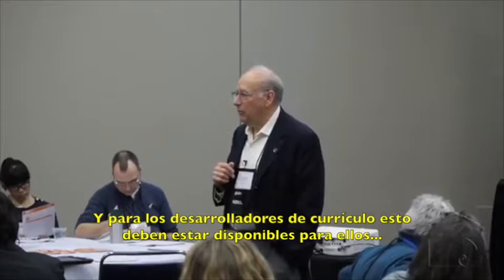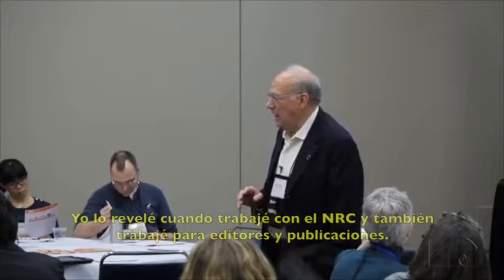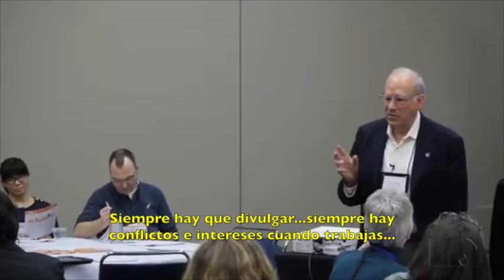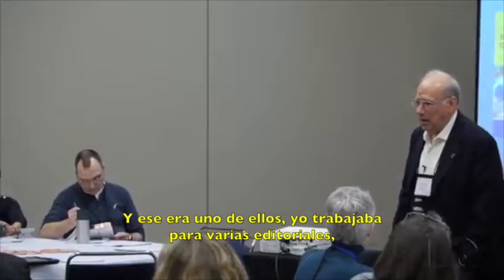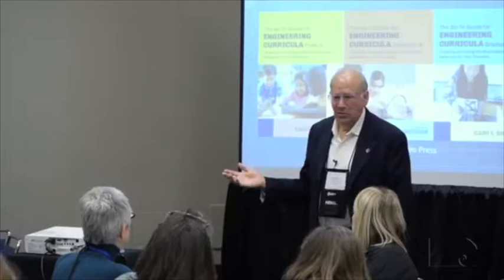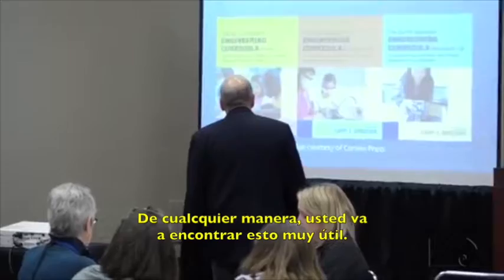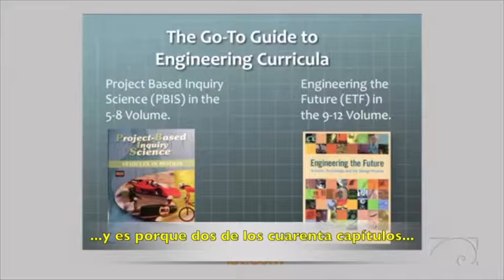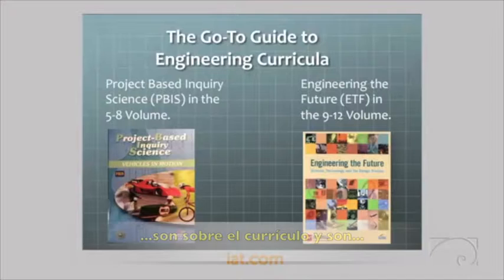Two of the 40 chapters are about curricula that It's About Time publishes — one is Project-Based Inquiry Science (middle school), and the other is Engineering the Future. I did disclose when I worked for the NRC that I had also worked for publishers. There are always conflicts of interest, and when you work for the NRC you identify what they are.